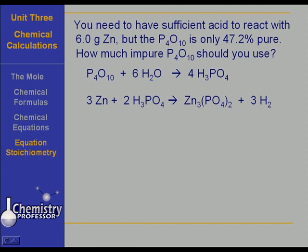The thing is, we have 6 grams of zinc that needs to react, but the P4O10 that we have in the first reaction is only 47.2 percent pure. And the question is, how much of that impure reagent do we need to have to react with zinc, to produce enough acid to react with zinc?